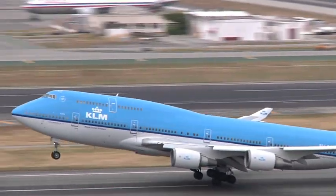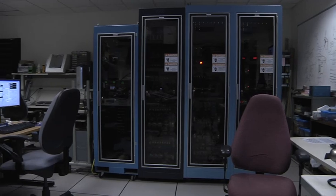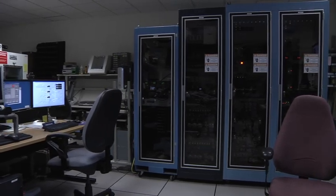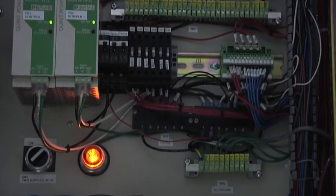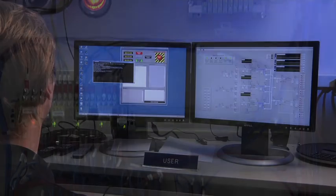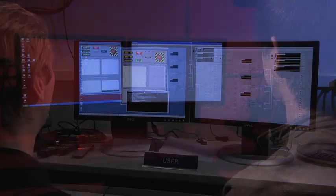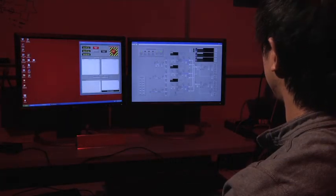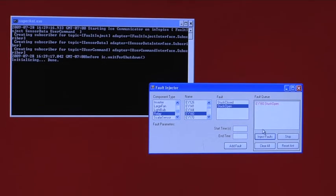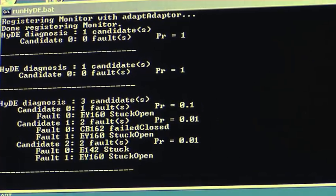Using the Advanced Diagnostics and Prognostics Testbed at NASA's Ames Research Center, researchers are able to simulate the electrical power systems commonly found on aircraft and spacecraft. Hyde is then set up to observe these simulations while an antagonist injects faults into the system. After the fault is injected, Hyde identifies the fault and recommends the likely cause.